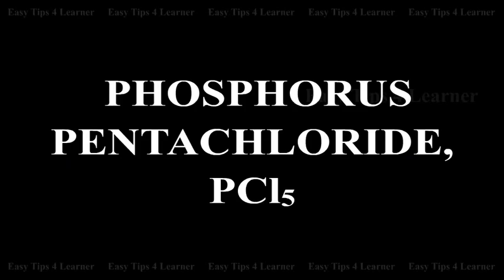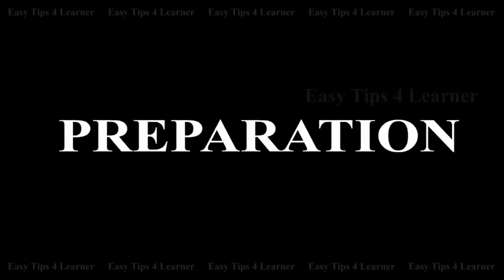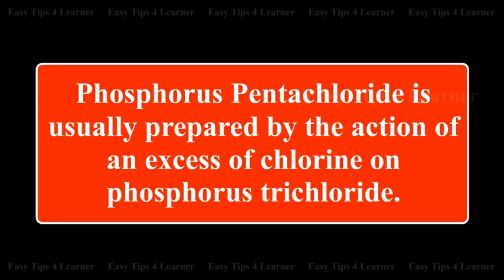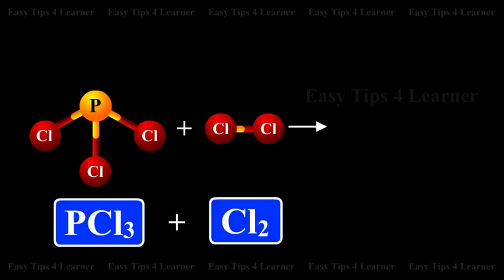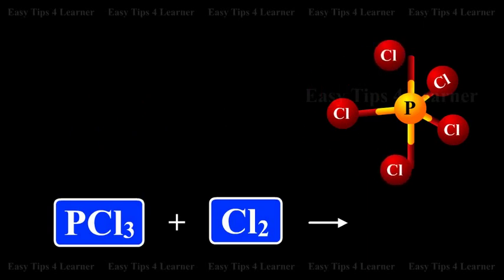Phosphorus pentachloride, PCl5 — Preparation. Phosphorus pentachloride is usually prepared by the action of an excess of chlorine on phosphorus trichloride. PCl3 + Cl2 gives PCl5.